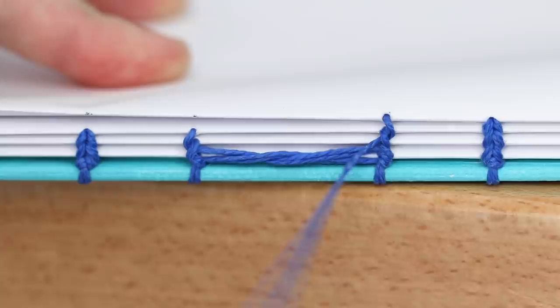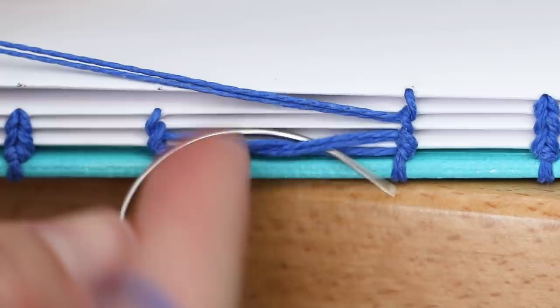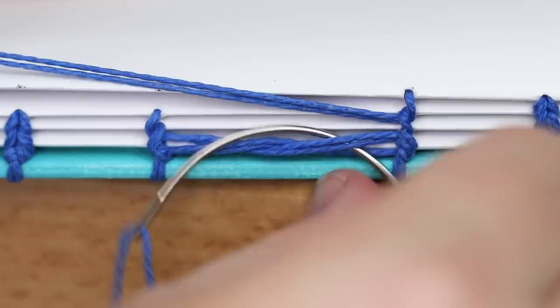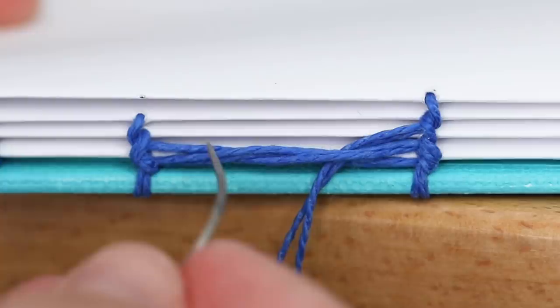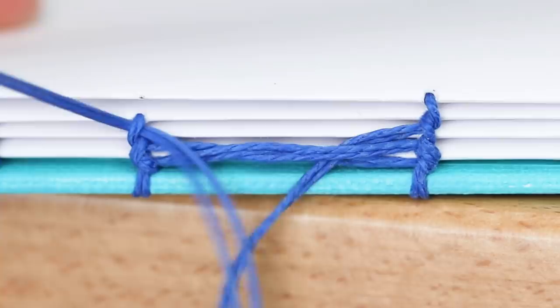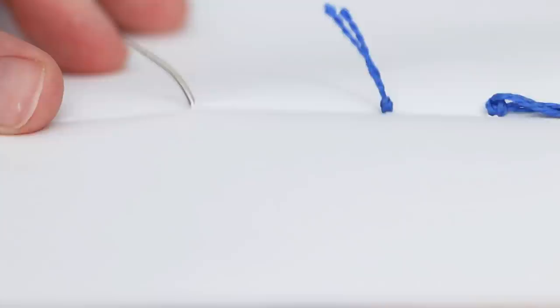To continue the French link stitch, this next row of thread is going to go behind the previous line of thread. And how I remember which area to go through is you want to go through the space that is right next to the stitch that you're working on. So in this case, it's toward the right side, and this will make more sense once we get further into the stitch. Then to return the needle to the next binding hole, I'm looping behind that next stitch like I did previously, and then returning back into the signature.